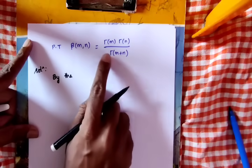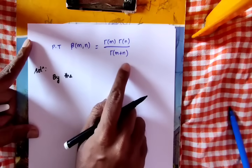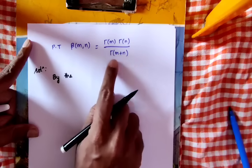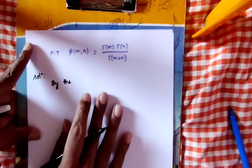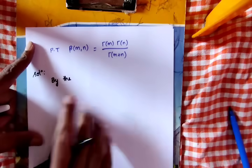Prove that beta(m,n) is equal to gamma(m) into gamma(n) divided by gamma(m+n). It is very important.